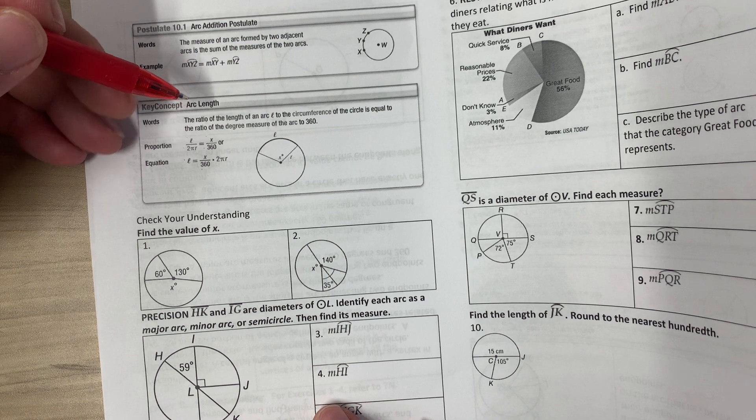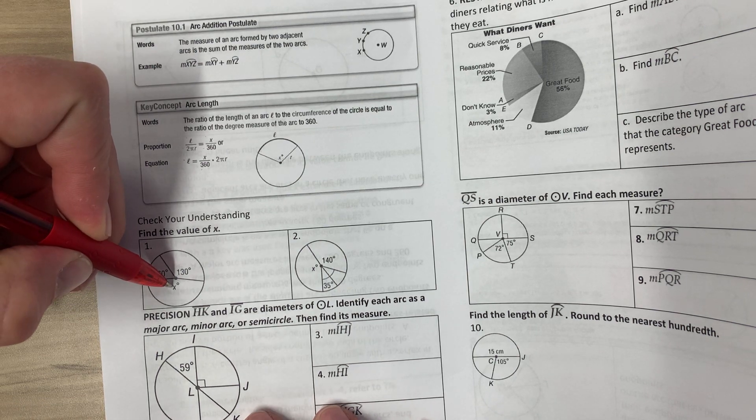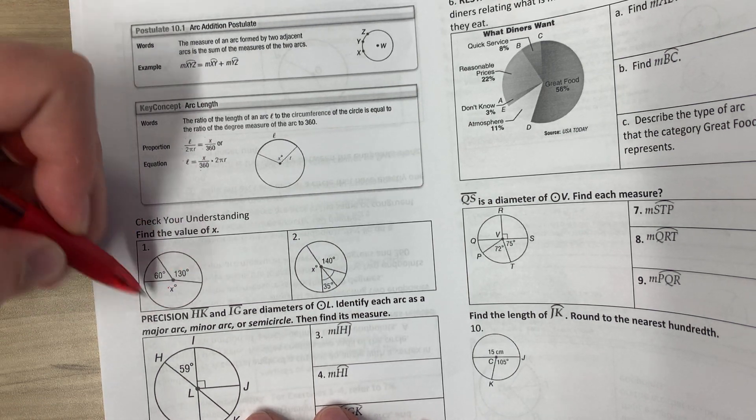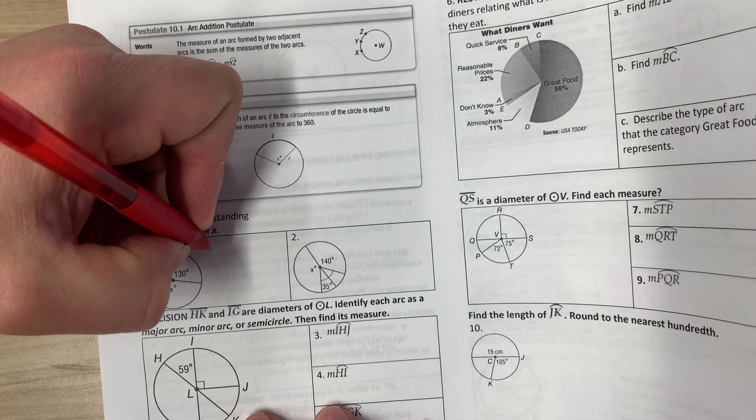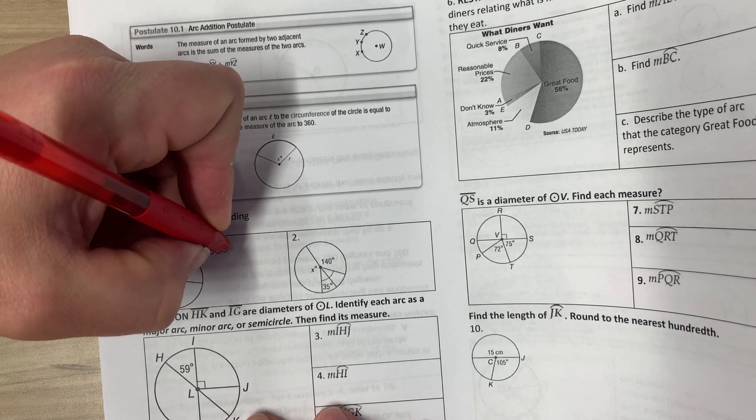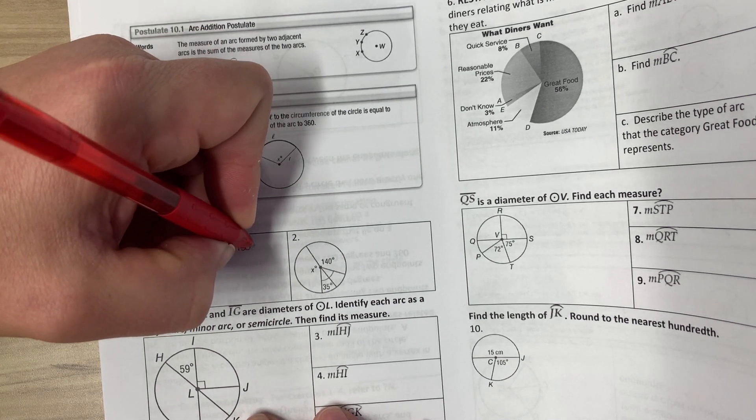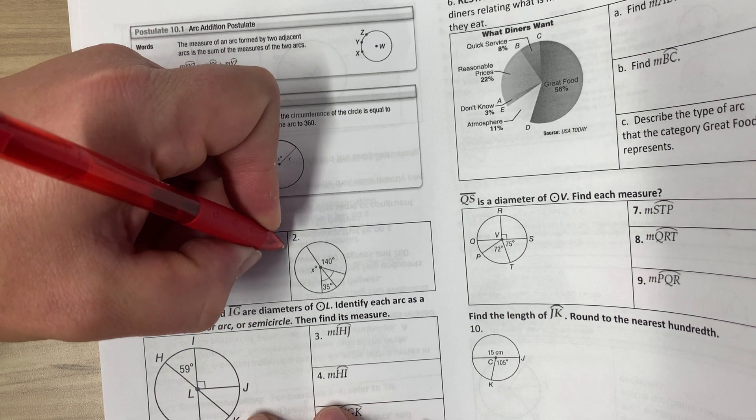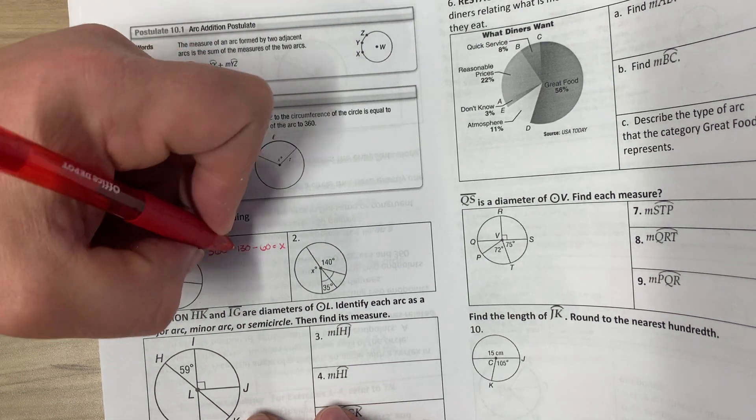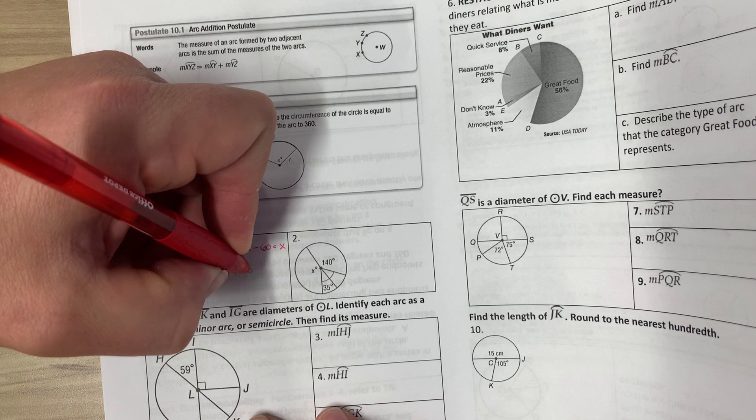So finding the value of X. If we're trying to find this value of X, first of all we know every circle is 360 degrees. So I just do 360 minus 130 minus 60 will equal X. So I get 170 degrees equals X.